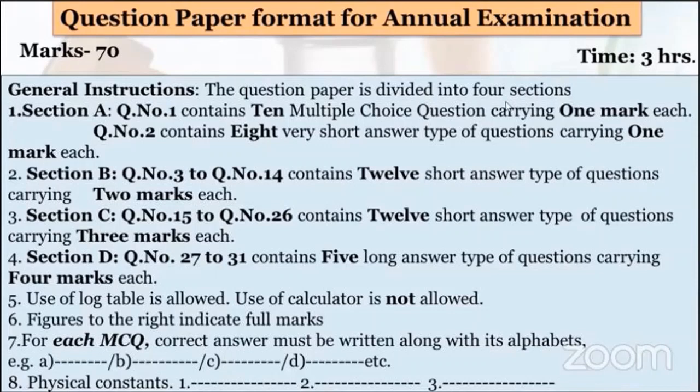Use of log table is allowed, but this log table is provided by the board — you don't have to carry it. Use of calculator is not allowed. Figures to the right indicate full marks. For each MCQ, the correct answer must be written along with its alphabet. For example, out of options A, B, C, D, if the correct answer is B, then you have to write B along with the answer. Physical constants or standard values will be provided in the paper.